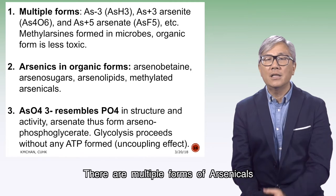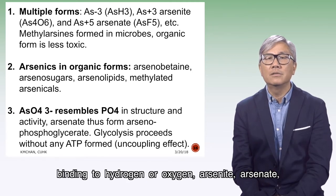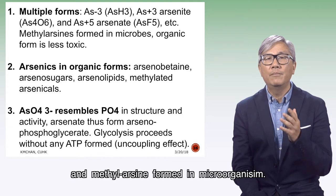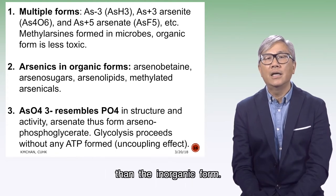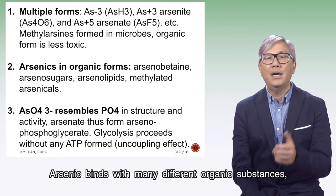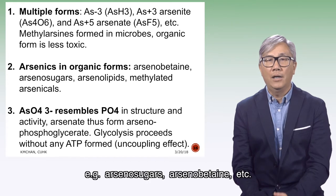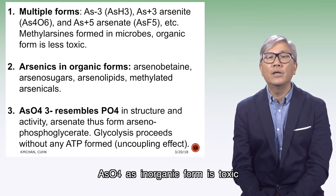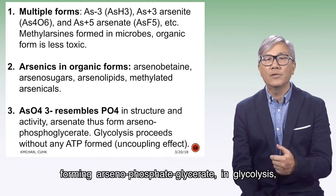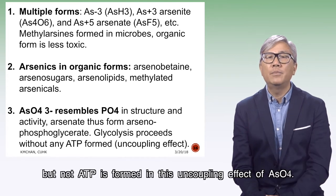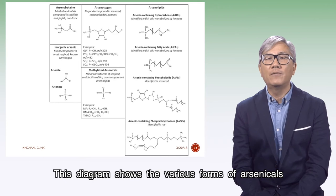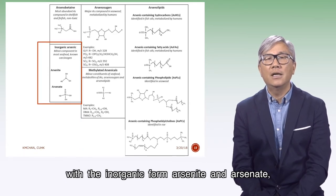There are multiple forms of arsenicals binding to hydrogen or oxygen. Arsenate and arsenite, and methyl arsenate are formed in microorganisms. This organic form is however less toxic than the inorganic form. Arsenic binds with many different organic substances such as arsenosugar and arsenobutane. AsO4 as the inorganic form is toxic as it mimics phosphate, forming arsenophosphate glycerate in glycolysis. This diagram shows the various forms of arsenic, including the inorganic forms arsenate and arsenite.